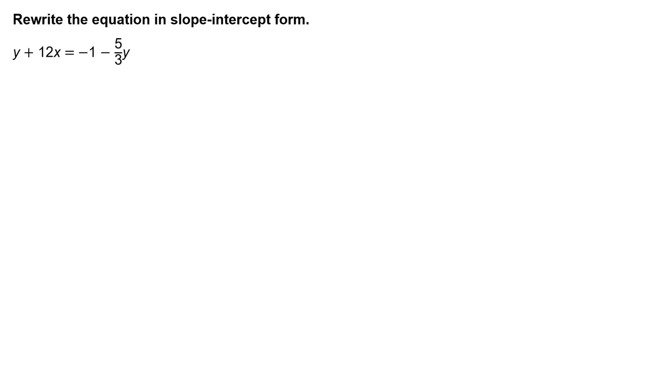Rewrite the equation in slope-intercept form. y plus 12x equals negative 1 minus five-thirds y.